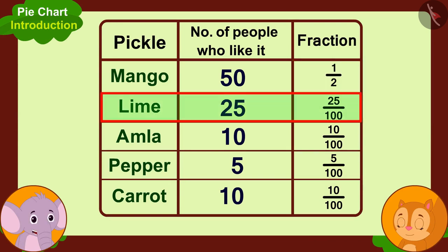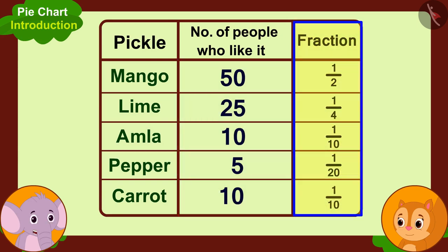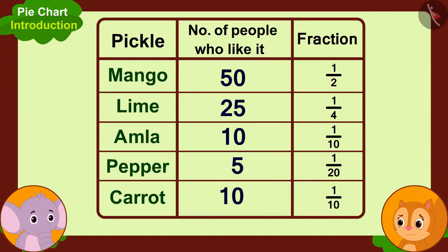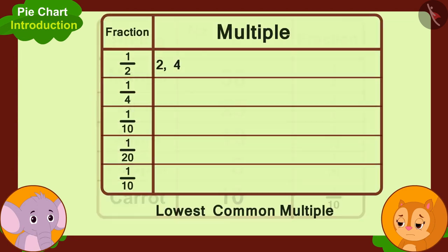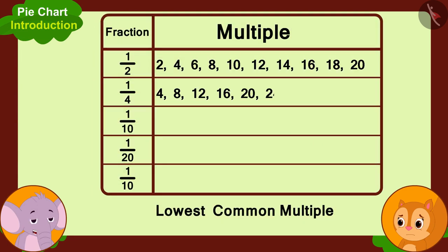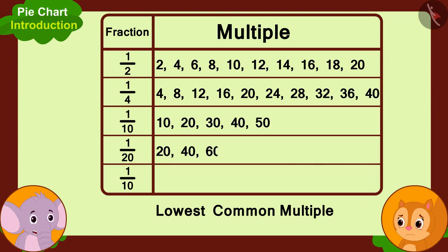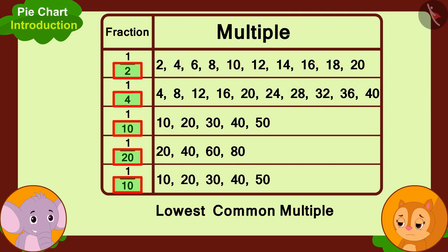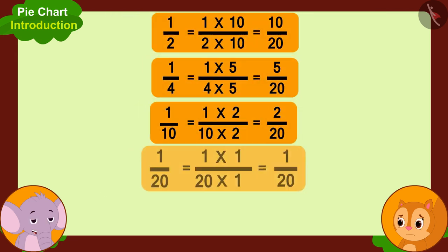In the same way, they write the different pickles liked by people as fractions of hundred. But the total number of parts in all these fractions is different, so Appu explains they need to find the lowest common multiple — the smallest common multiple — of the total parts of all the fractions. The lowest common multiple of these numbers turns out to be 20.